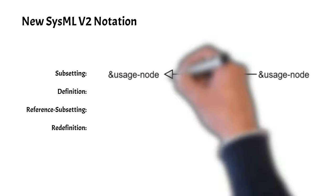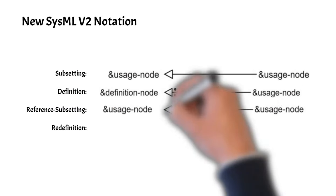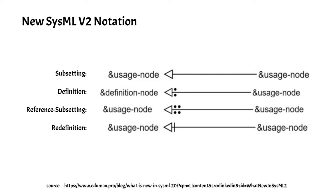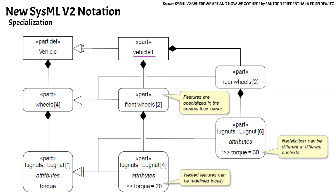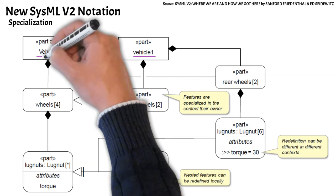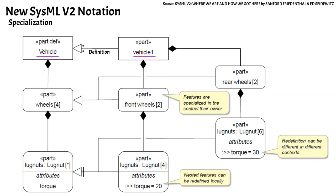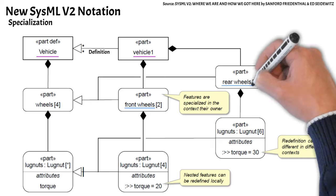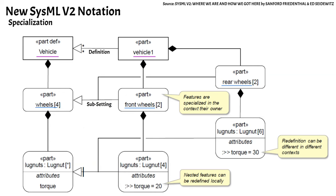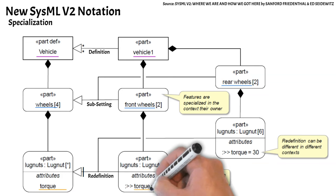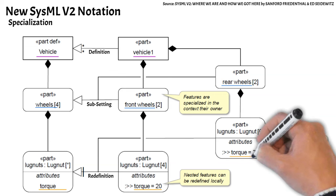SysMLv2 offers new notation for subsetting, redefinition, and reference subsetting. In the example, the part Vehicle1, which is an element of usage, is defined by the part def Vehicle, which is an element of definition. Front wheels and rear wheels parts subset the wheels part. The lug nut part's torque attribute is redefined from an undefined value to 20 for the front wheels' lug nuts and 30 for the rear wheels' lug nuts.